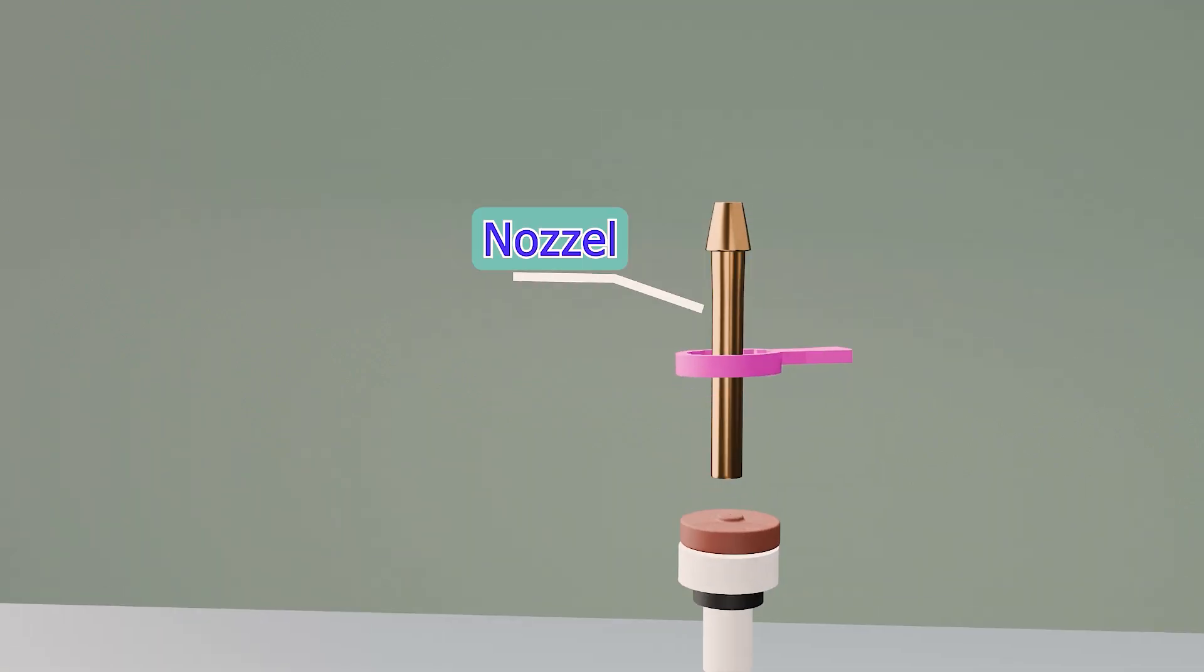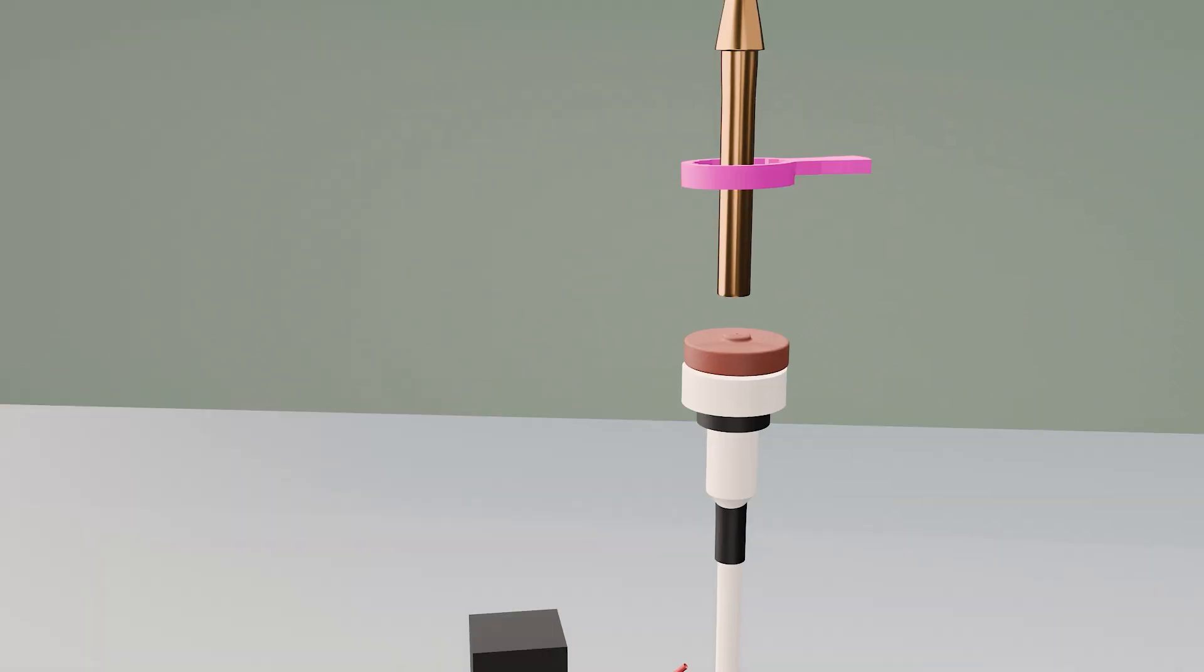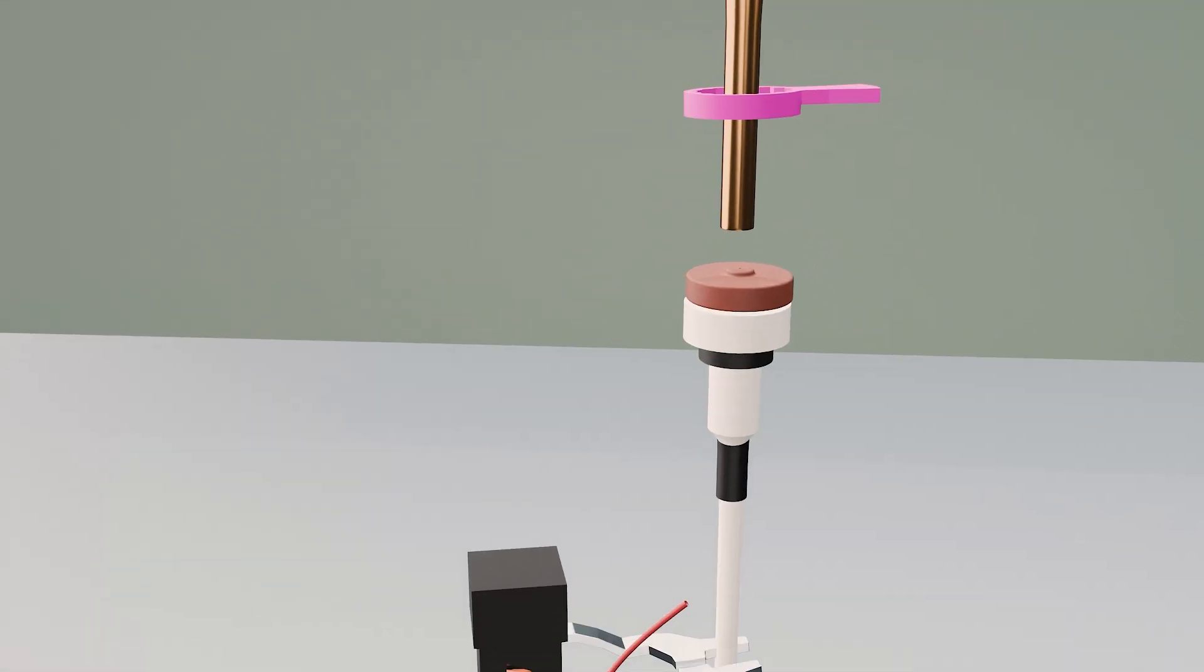Nozzle directs the gas flow. Adjust ring allows control over the flame height. Sponge filter regulates fuel flow for consistent burning.